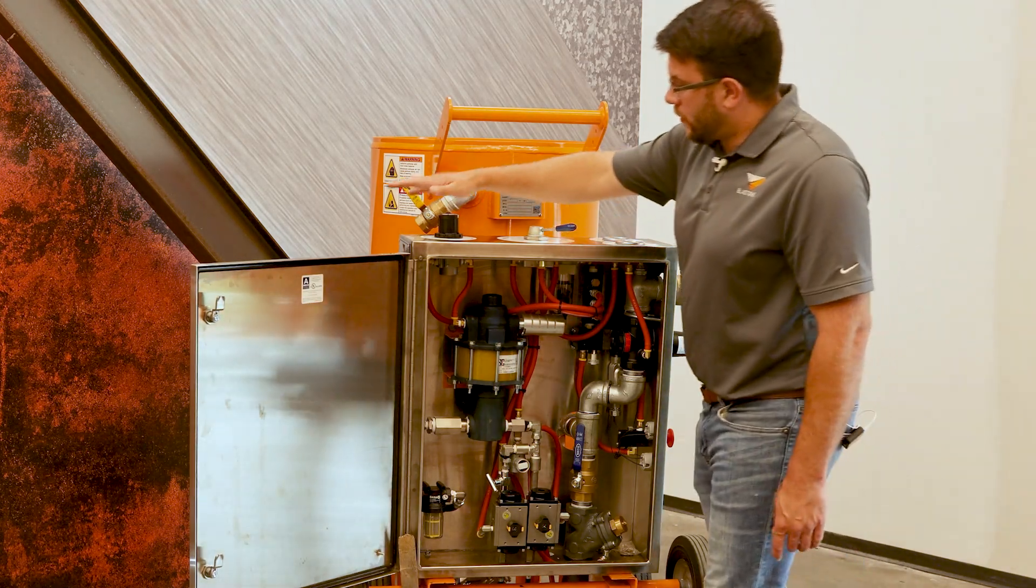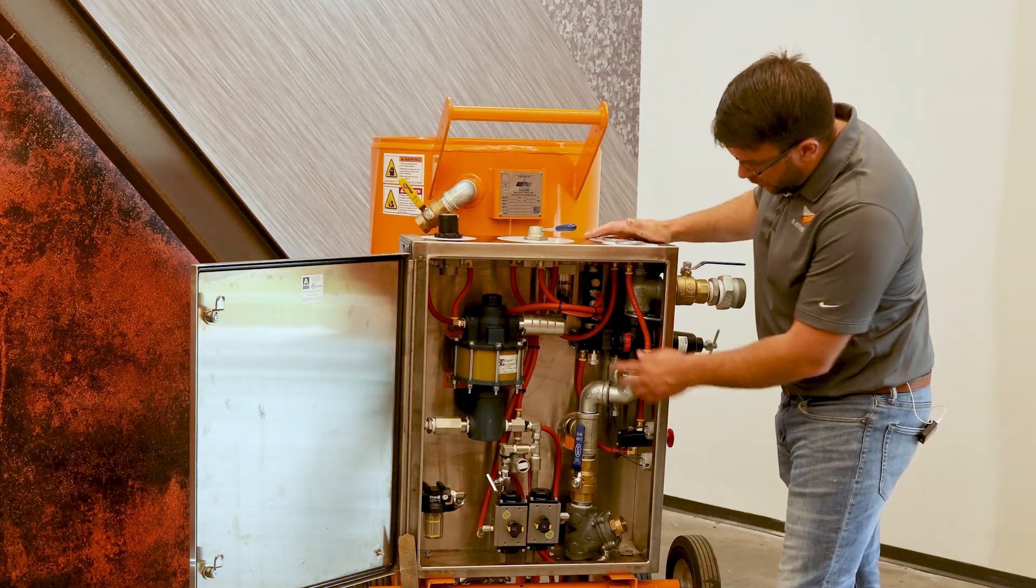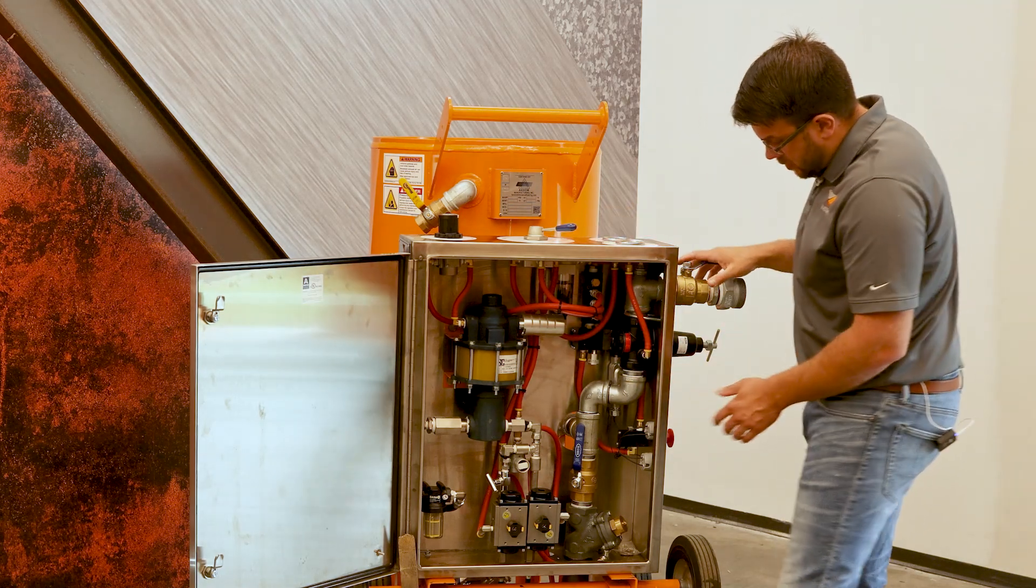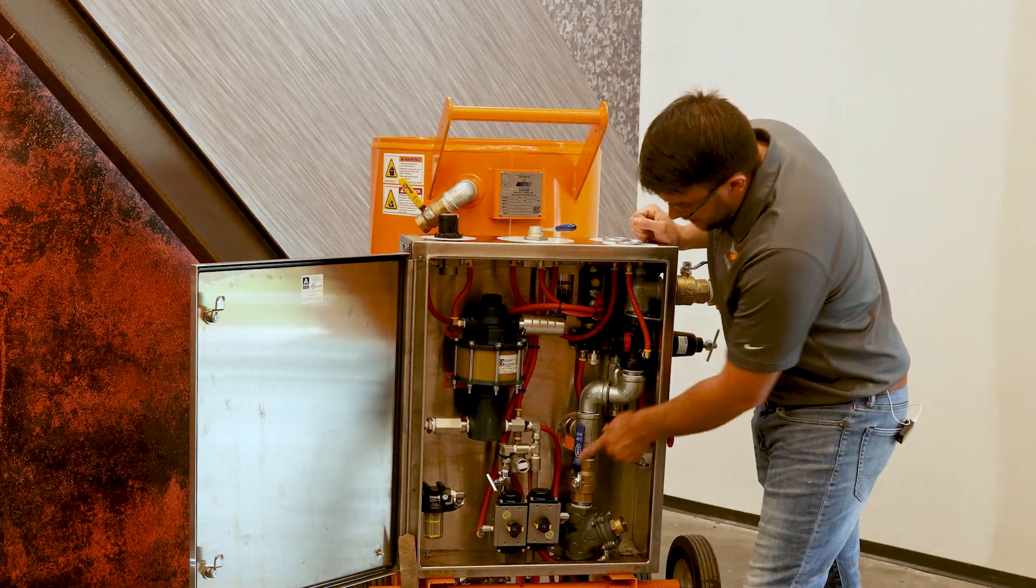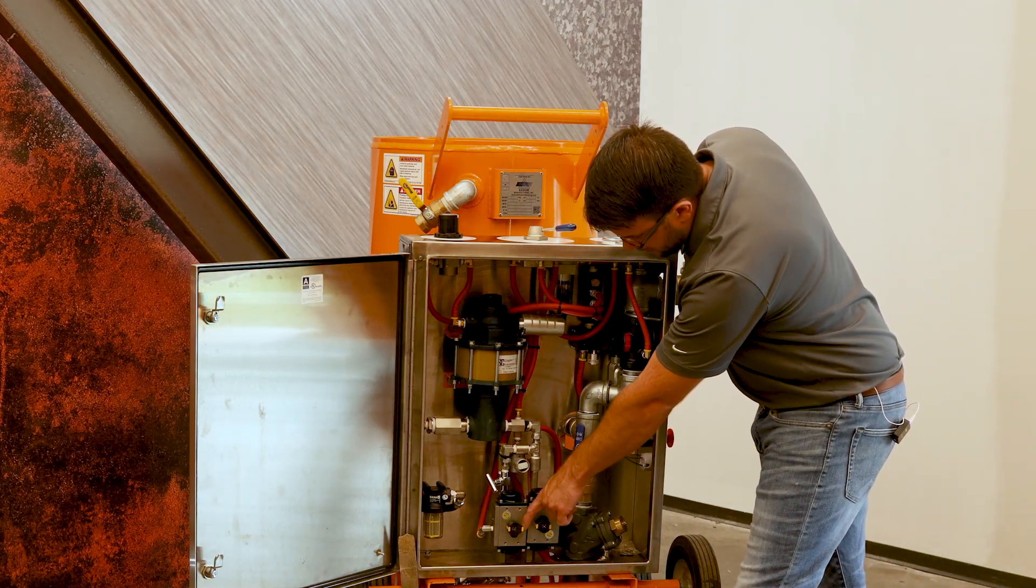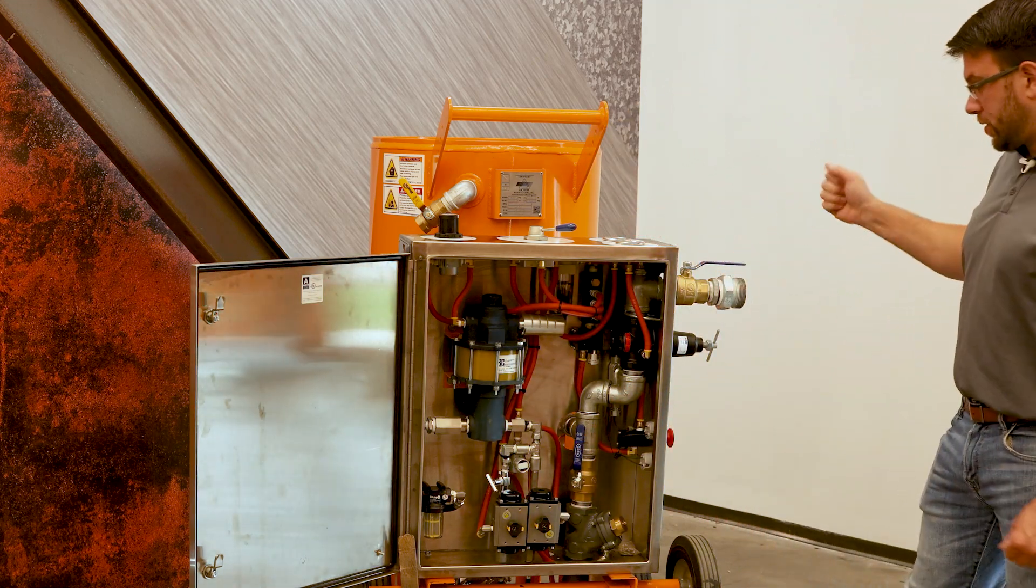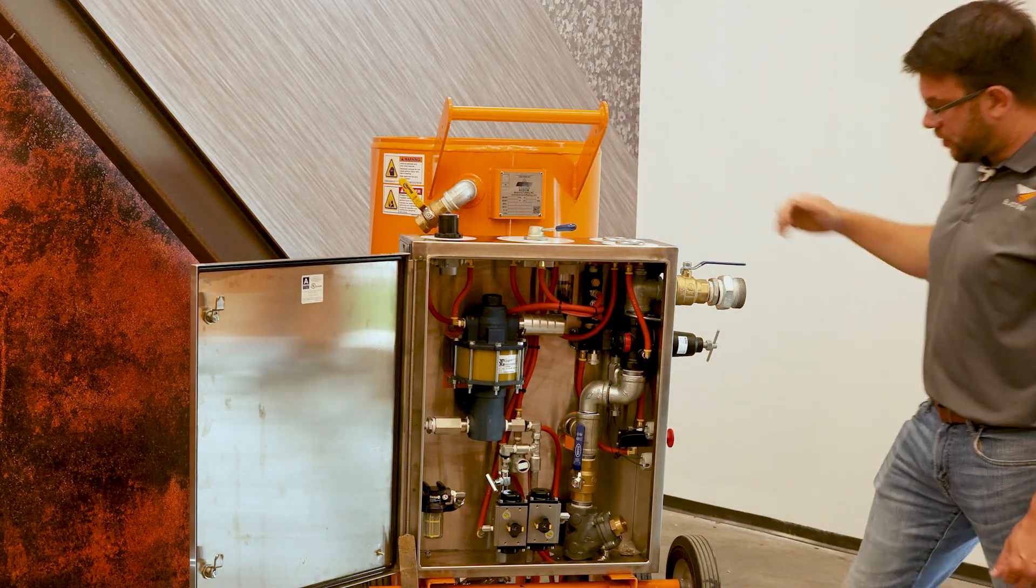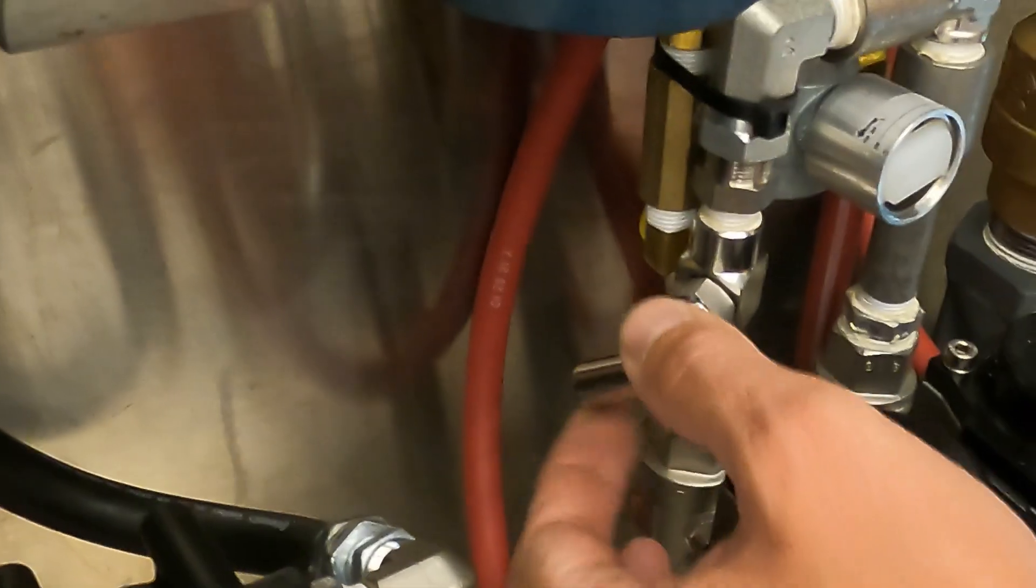The regulator to the pump is set already to 50 psi. We don't have to mess with it. And what we're going to do is pull the blast trigger, your dead man handle, and what that's going to do is open up the mist blast air actuated solenoid there. So what's going to happen is you're going to start blasting at standard dry pressure, and you're going to be able to adjust your water.